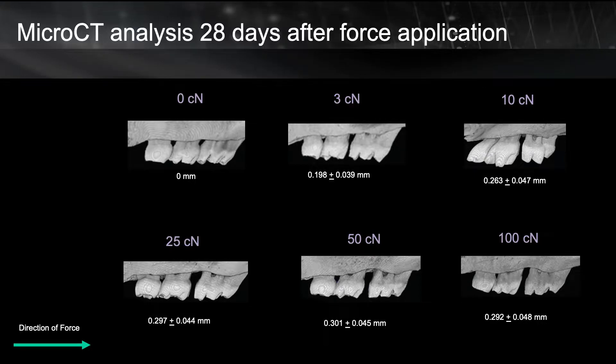Let's grab a group of animals and expose them to different magnitudes of force. In these experiments, we applied force to the first molar of the maxillary of rats at different magnitudes from 3 centinewton to 100 centinewton. If we look at the CT scan of these animals after 28 days, we notice that as we increase the magnitude of the force, the magnitude of movement also increases. However, when we reach about 25 centinewton and above, we do not see an increase in magnitude of movement in response to the increase in force.